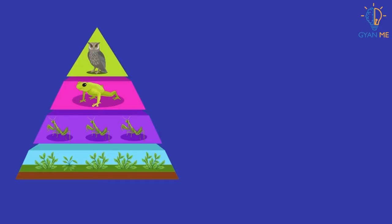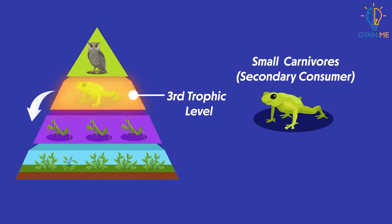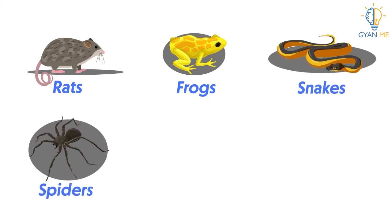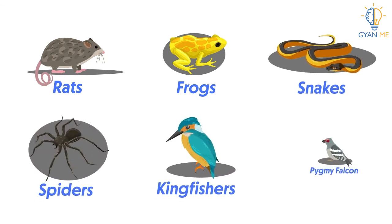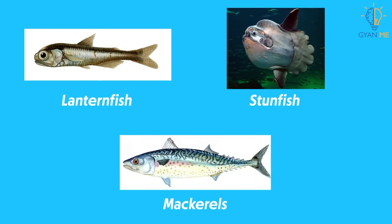While small carnivores or the secondary consumers form the third trophic level. These animals feed on primary consumers. They usually eat meat and are termed as predators. For example, rats, frogs, snakes, spiders, and some birds like kingfishes or pygmy falcons. While some big fishes like lanternfish, oceanic sunfish, mackerels, etc.